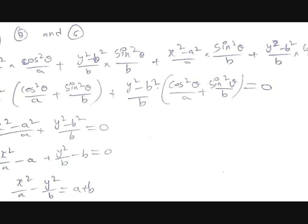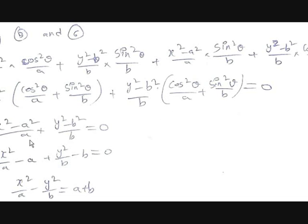Taking (x² − A²) common from the first and third terms gives (x² − A²)/A · (cos²θ/A + sin²θ/B). Similarly, taking (y² − B²) common from the second and fourth terms gives (y² − B²)/B · (cos²θ/A + sin²θ/B) = 0. Dividing the entire equation by (cos²θ/A + sin²θ/B) leaves: (x² − A²)/A + (y² − B²)/B = 0.